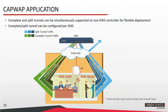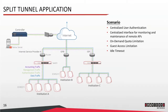Complete and split tunnels can actually be simultaneously supported on one controller, and you can choose the tunnel type for each SSID. Please note that each service zone will only accept one tunnel type. So if you have multiple SSIDs mapping to the same service zone, make sure that you only select one tunnel type for all of these SSIDs. In this diagram, you can see that two SSIDs have been configured — one for staff members and the other for guests. For the staff SSID, we can choose to use a complete tunnel so that staff members can access the intranet at the headquarters. For the guest SSID, we can configure it to use a split tunnel to prevent those connected on this SSID from accessing the intranet at the headquarters.